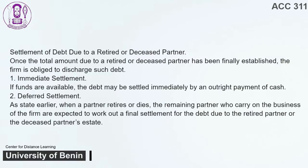Settlement of Debt Due to a Retired or Deceased Partner. Once the total amount due to a retired or deceased partner has been finally established, the firm is obliged to discharge such debt. 1. Immediate settlement — if funds are available, the debt may be settled immediately by an outright payment of cash. 2. Deferred settlement — when a partner retires or dies, the remaining partner who carries on the business of the firm is expected to work out a final settlement for the debt due to the retired partner or the deceased partner's estate.